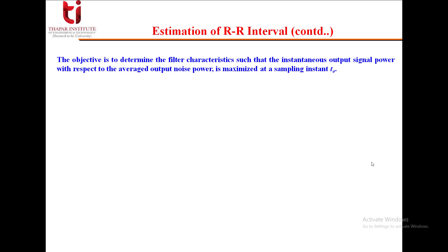The objective is to determine the filter characteristics such that the instantaneous output signal power with respect to the average output noise power is maximized at a sampling instant T0. That is, we have to design a filter H(F) whose impulse response H(T) is such that SNR output will be S0 square at a particular time instant T0 divided by the energy of noise output E[N0 square T]. It should be maximum.